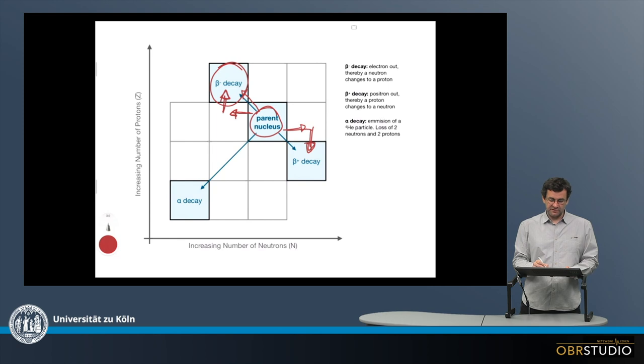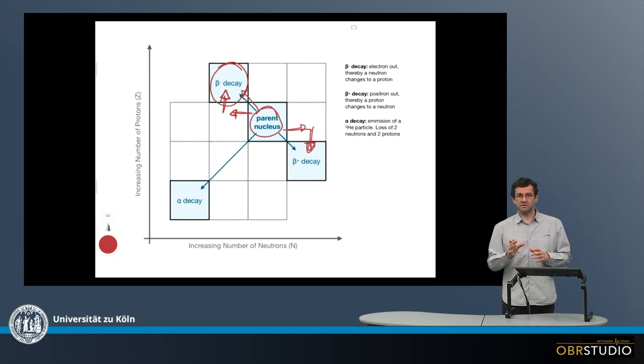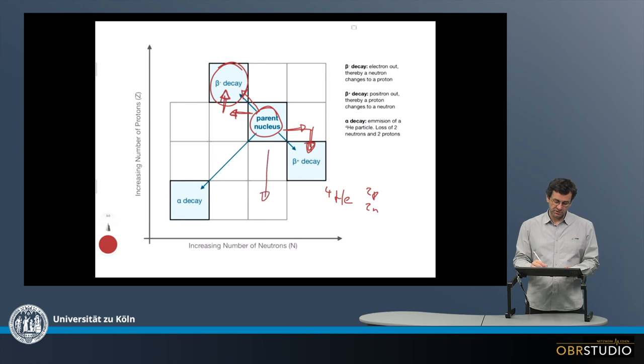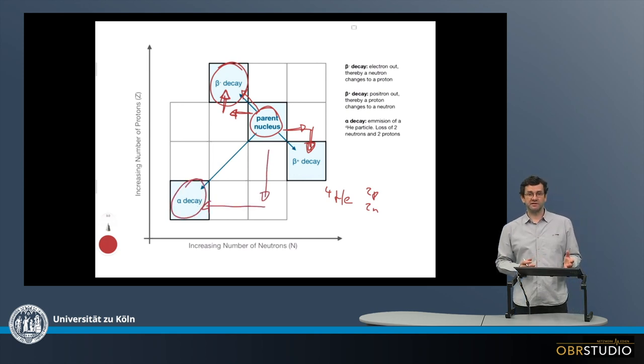And then the third mode is the alpha decay. Now this is not a transformation in the core, this is just the core loses something. And in this case, the core loses a helium-4 core. So two protons and two neutrons are lost, which means two protons are lost, two neutrons are lost, and then we end up here. And this is the alpha decay.